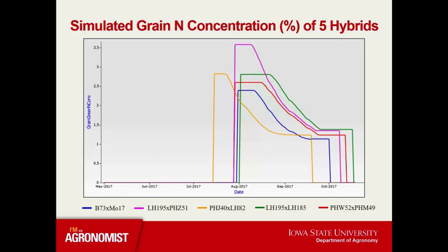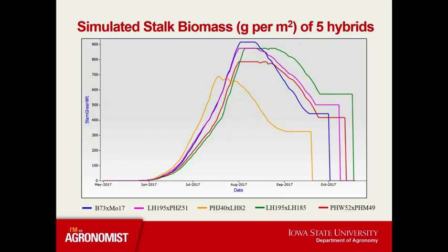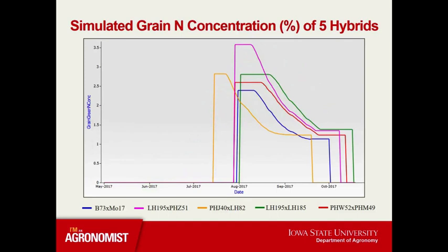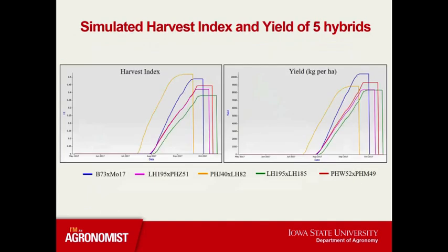As breeders, we often use grain yield as an end-of-season component of performance, but there are many drivers of yield — grain nitrogen concentration or stalk biomass can impact standability and thus yield. When we select on grain yield in one year and again in another year, there's a high probability we may not be selecting on that same driving component across both years. This is where crop growth models become very useful. For instance, looking at simulated harvest index and yield for these five hybrids, our early hybrid PHJ40 by LH82 has the highest harvest index, but B73 by MO17 has a higher yield — these are the types of insights crop growth models provide.